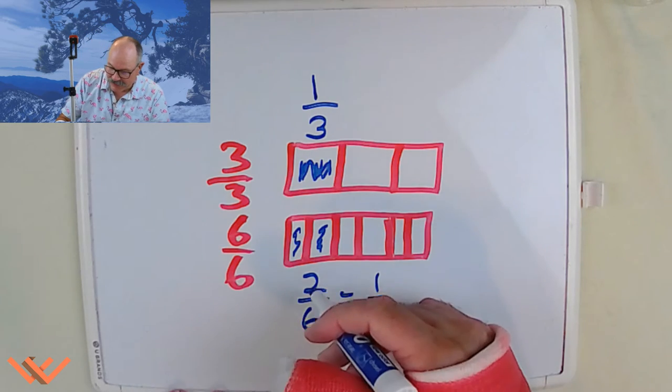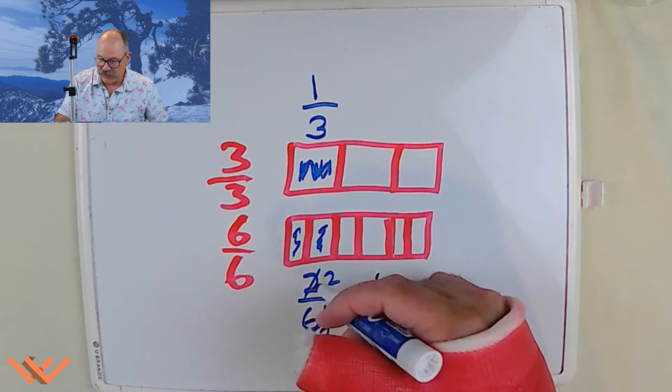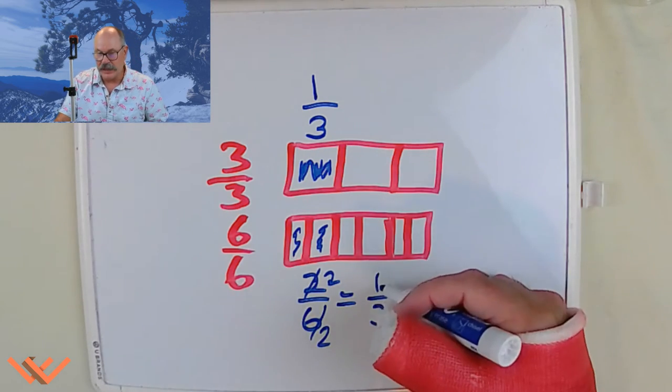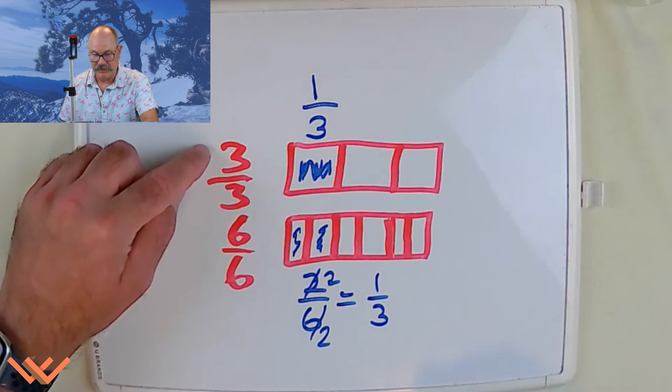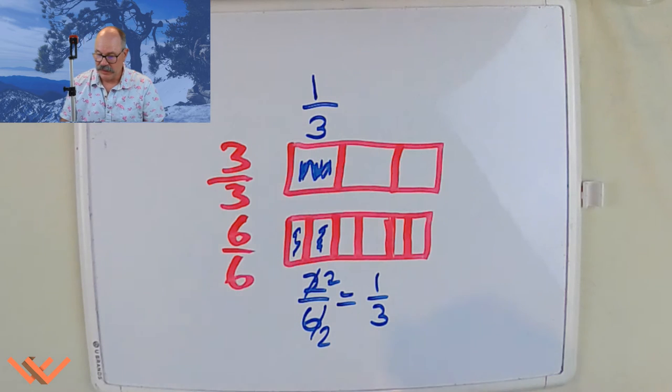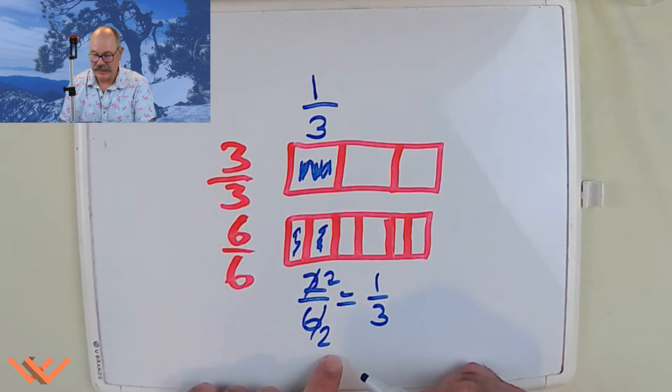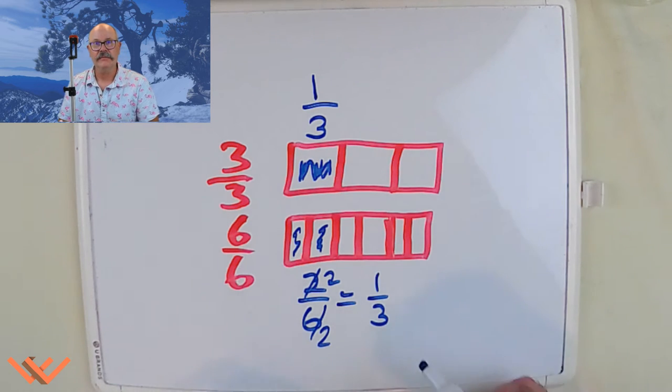Let's take a look. So that two sixths is equal to one third. So that equals to one third. What we can do is we can divide each side by two. And two divided by two is equal to one. Because remember, any number divided by itself is equal to one whole. And then six divided by two is equal to three. There we go.